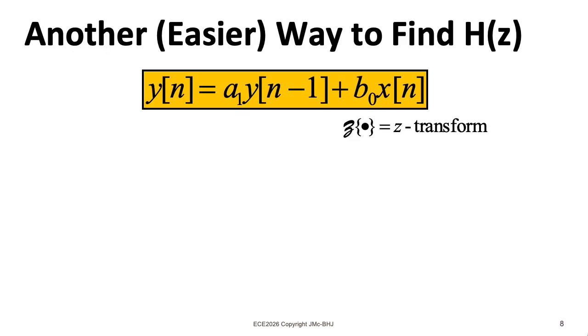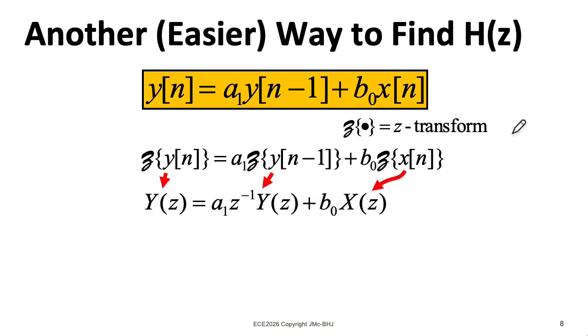We can apply the z-transform directly to the difference equation. We'll just write the z-transform of little y is big Y, the z-transform of little x is big X, and in the case of transforming little y of n minus one, well that's just going to be big Y of z times this z to the minus one to handle the delay. And then according to linearity, the constants just hang out in front.